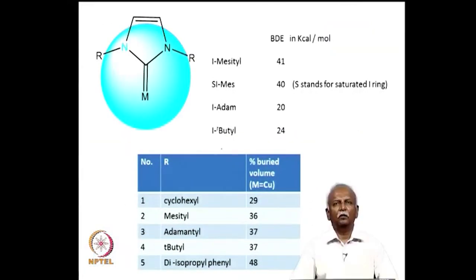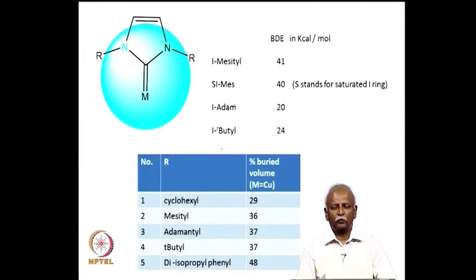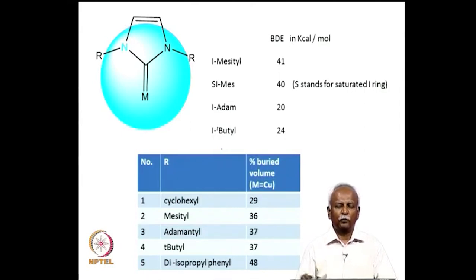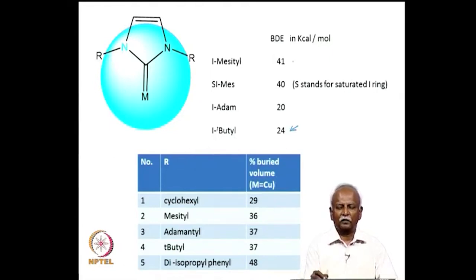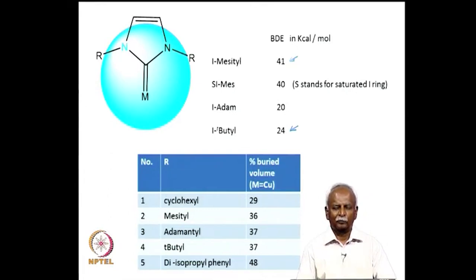The bond dissociation energy is related to the percentage buried volume. A larger buried volume corresponds to a smaller bond dissociation energy. For example, tertiary butyl groups on nitrogen give a significantly smaller buried volume but weaker bonds, whereas a mesityl group — being flat — occupies less space and gives a larger bond dissociation energy, indicating a stronger metal-carbon bond.